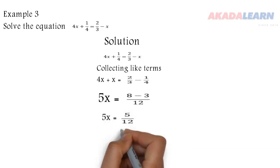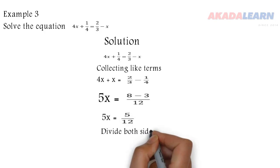To make x standalone, we divide both sides by 5, or we multiply both sides by 1/5, which is the same thing. When we do that, we get x = 1/12.